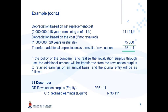The depreciation for the 2012 year is the 2 million net replacement cost over the 18 years of remaining useful life — note you can never go back and use the 20 years anymore — giving you 111,111. The depreciation based on the original cost of the asset is 1.5 million over 20 years, giving 75,000. Because this asset was revalued, there is an additional depreciation charge of 36,111 resulting from the revaluation. Paragraph 41 says if it is the policy of the company to realize the surplus through use, this additional amount — the difference between depreciation on the revalued amount and depreciation on original cost — must be transferred from the revaluation surplus to retained earnings annually at year end.